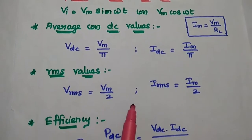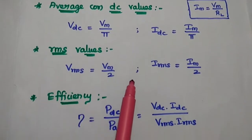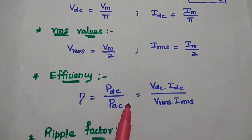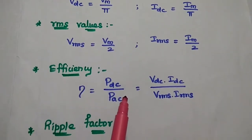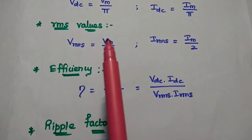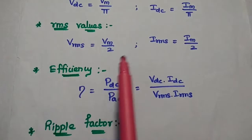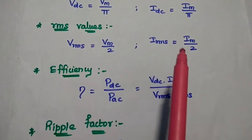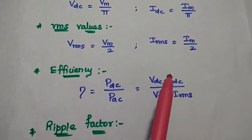The RMS values represent the AC signal. Vrms = Vm/2 and Irms = Im/2.